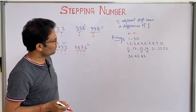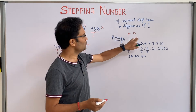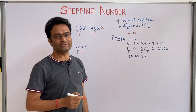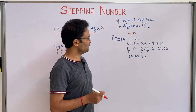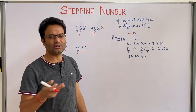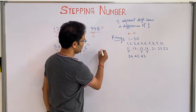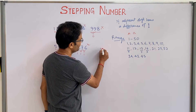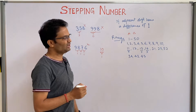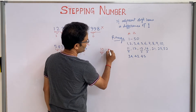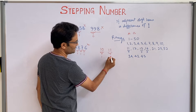Let's understand once more. If the range is from 1 to 50, what are the stepping numbers? All single digit numbers are by default stepping numbers because they don't have adjacent digits. If you see 10, the difference between 1 and 0 is 1, so 10 is a stepping number. But 11 is not, because the difference of the two adjacent digits is 0.